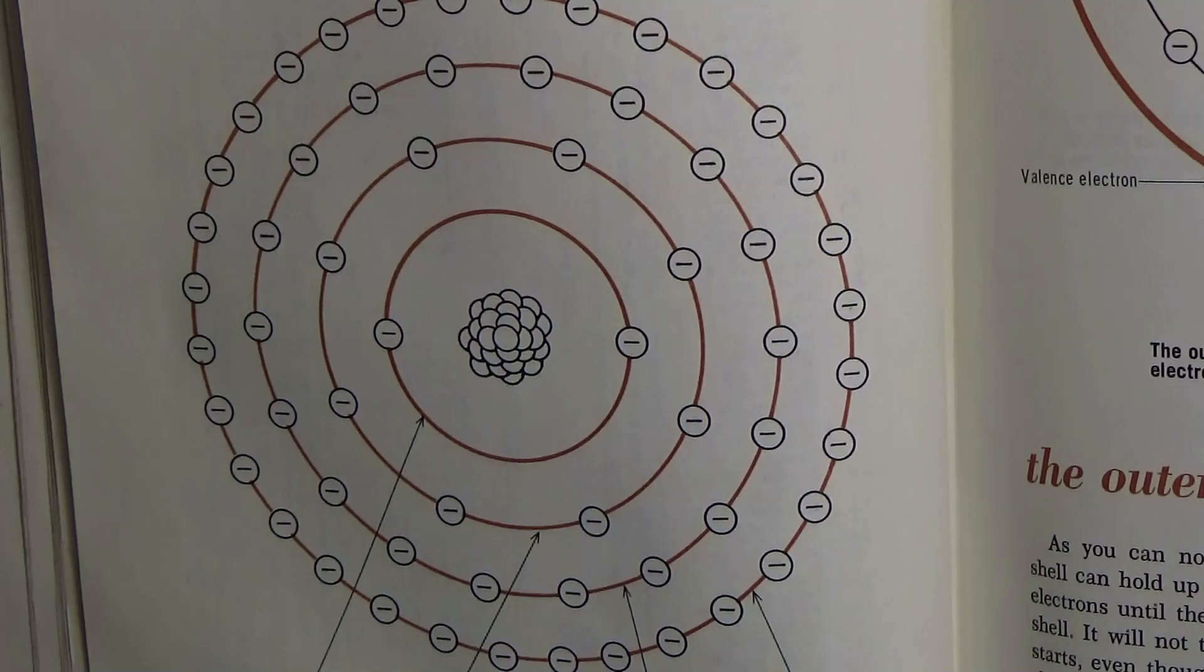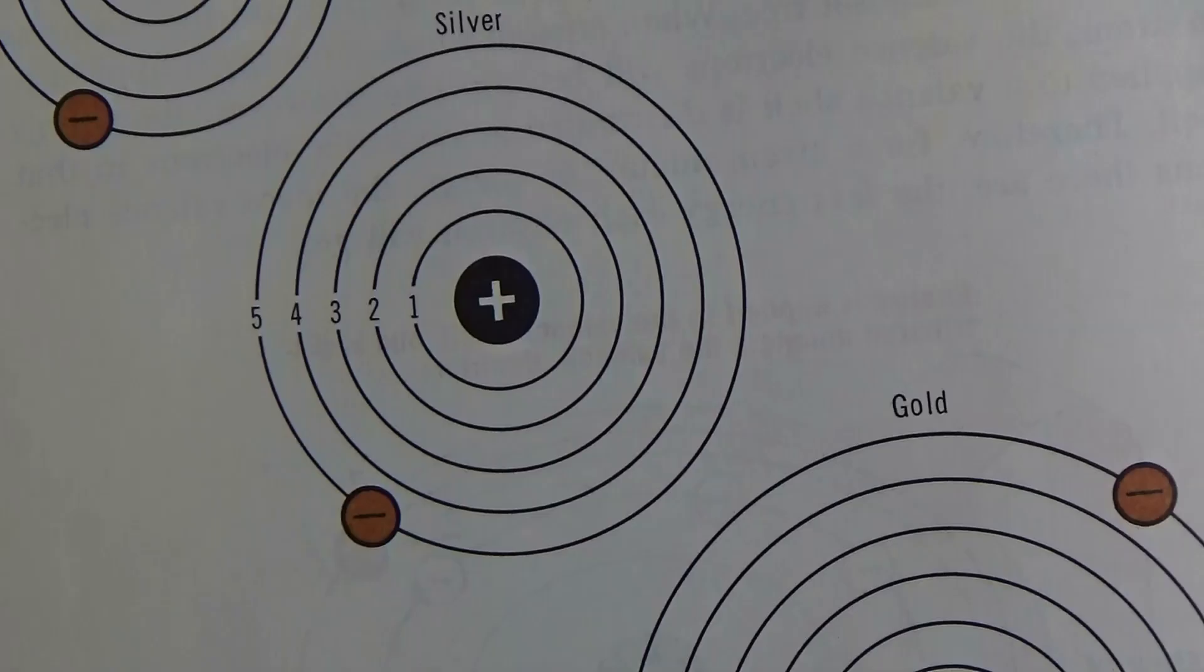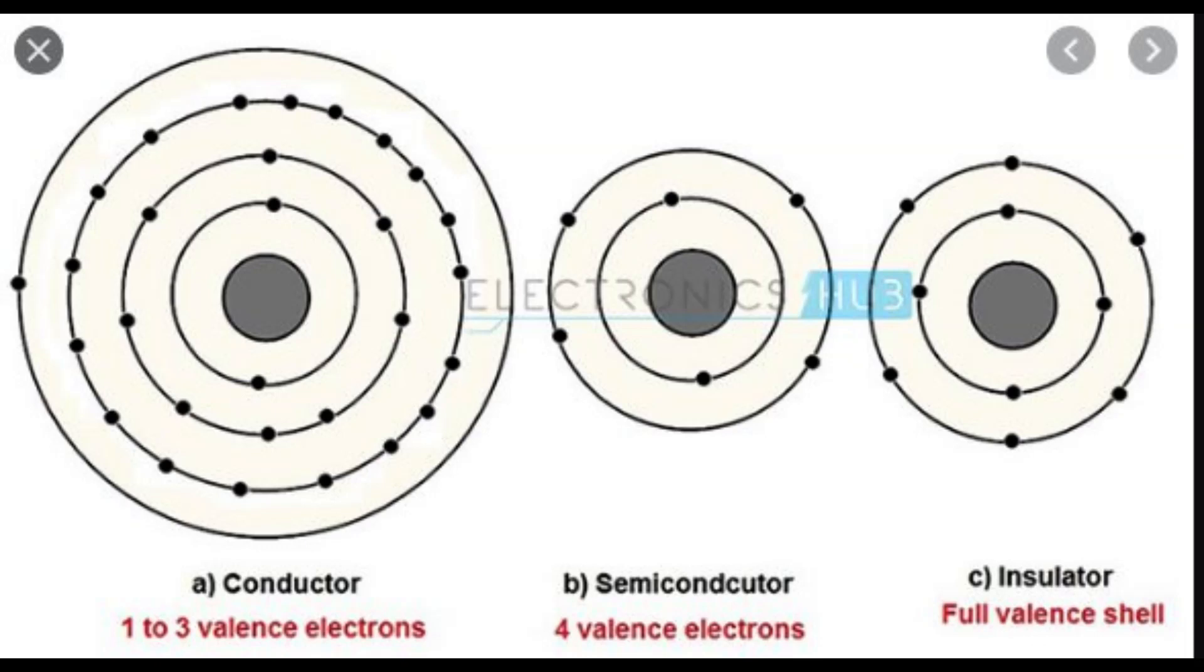Conductors have less valence electrons, and as a result, their electrons are more easily freed. The best conductors have only one valence electron. Insulators have more valence electrons, requiring more energy to free electrons and produce electricity.